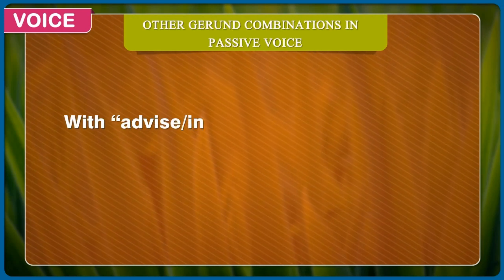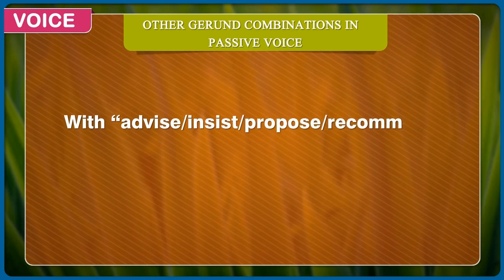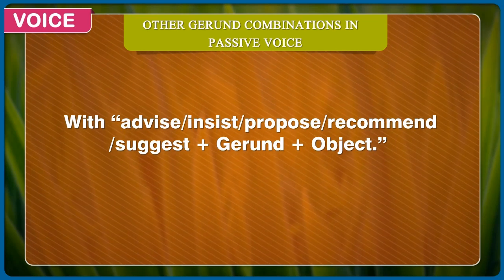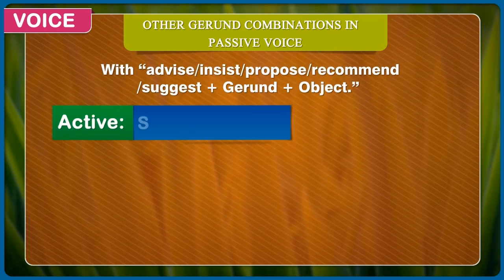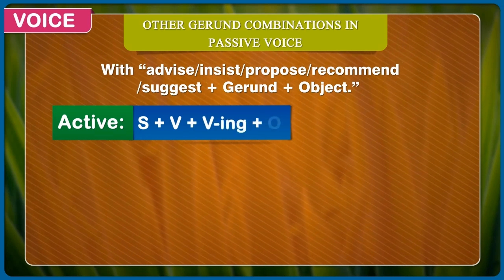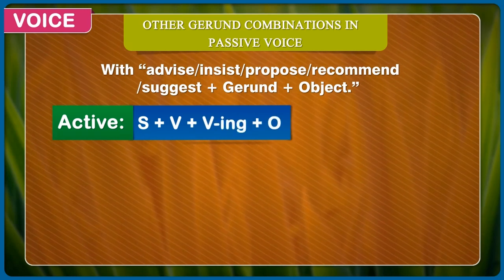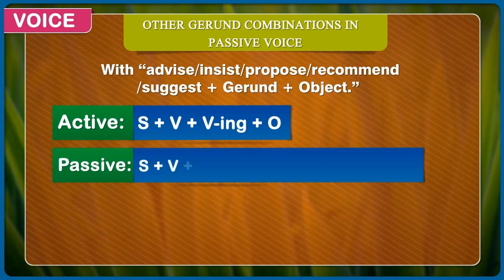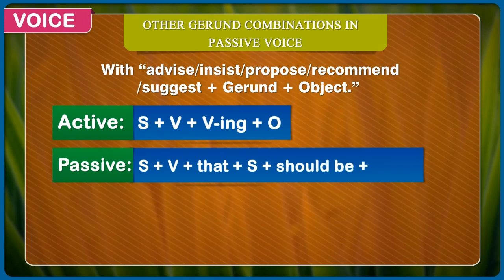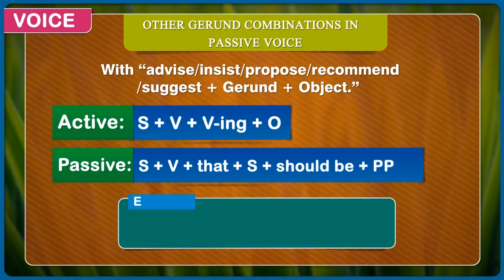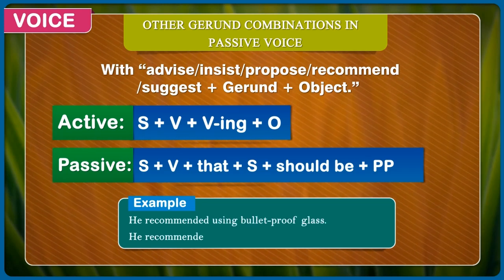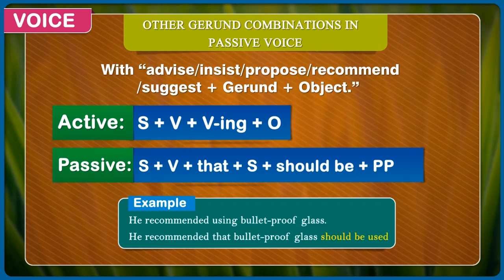Other gerund combinations in passive voice. With advice, insist, propose, recommend, or suggest + gerund + object. Active: subject + verb + verb with -ing + object. Passive: subject + verb + that + subject + should be + past participle. Example: He recommended using bulletproof glass. He recommended that bulletproof glass should be used.